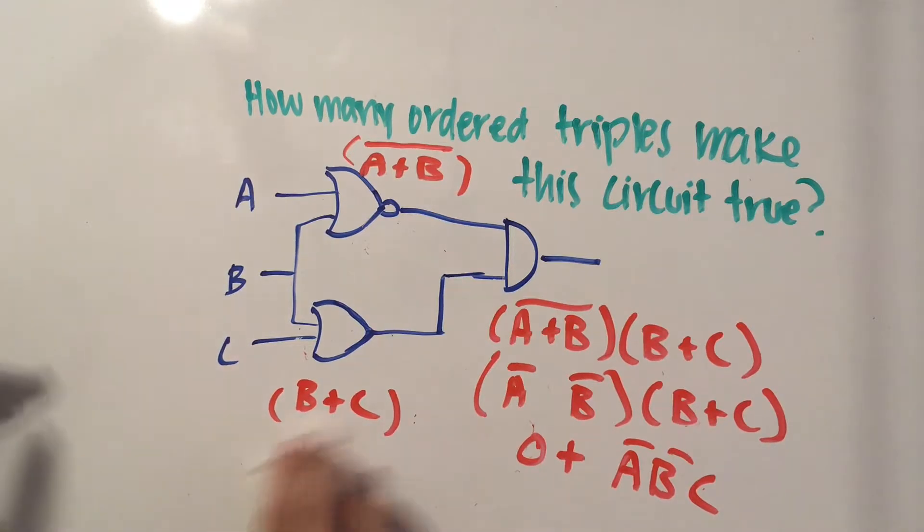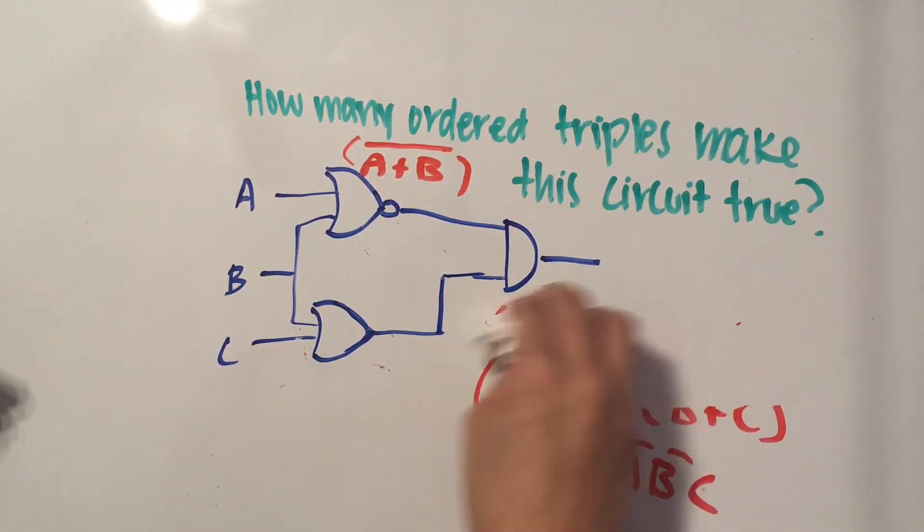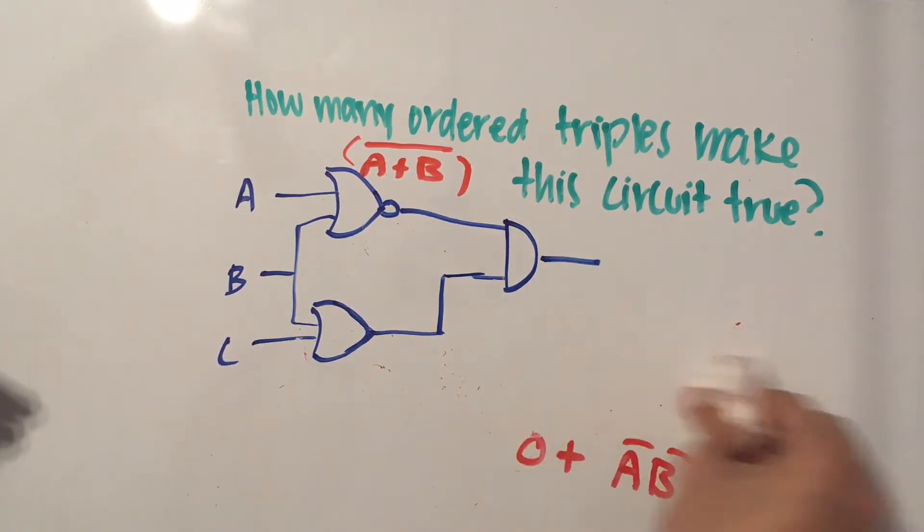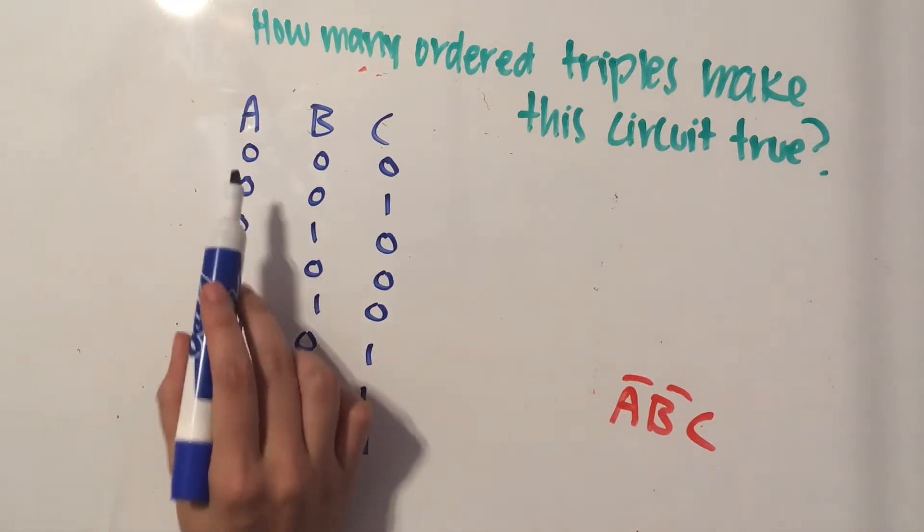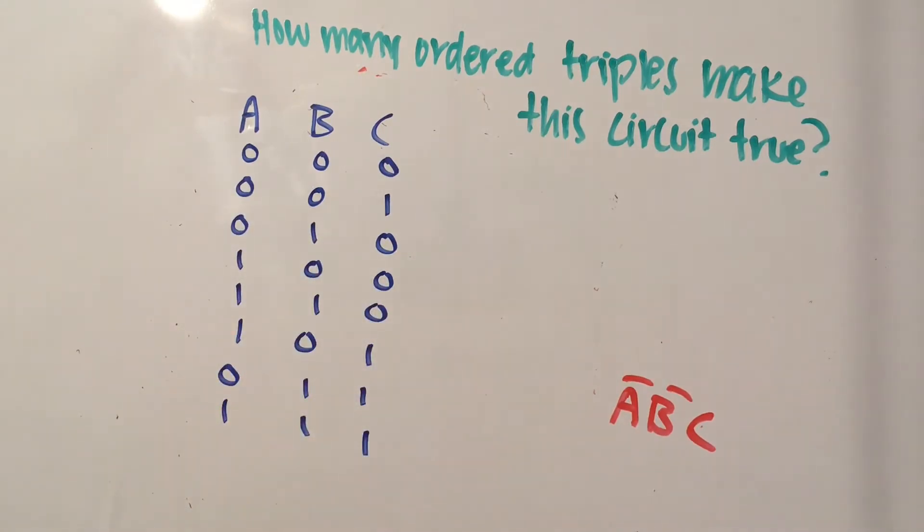So what we need to do next is, after simplifying it, we can create a truth table and see which ones result in true. So as you can see, there are eight possible combinations of A, B, and C when they are either one or zero. And so we're going to plug each one of these into our simplified equation and then see if any of them result in true.